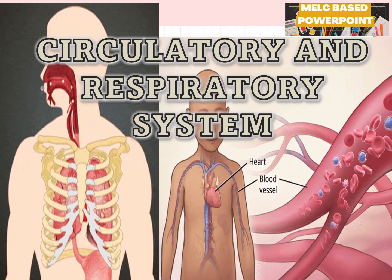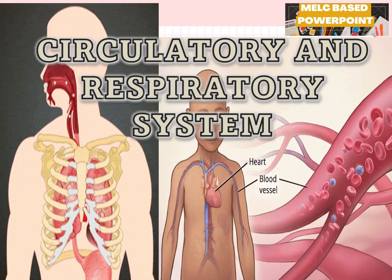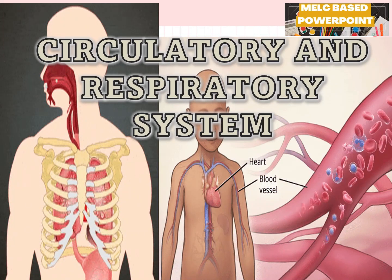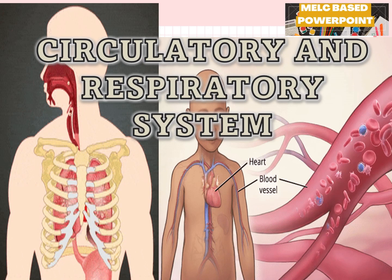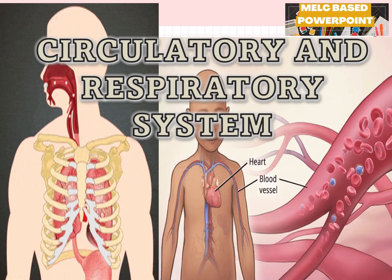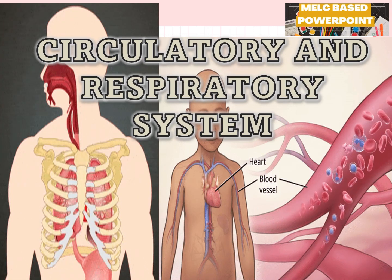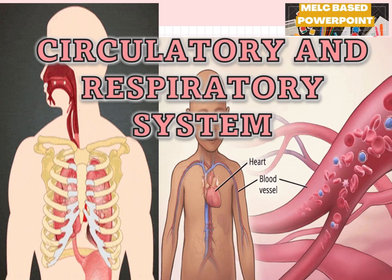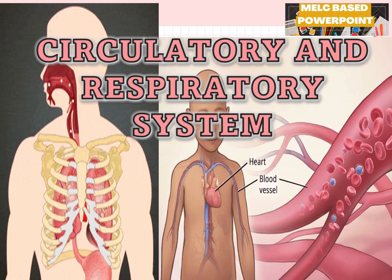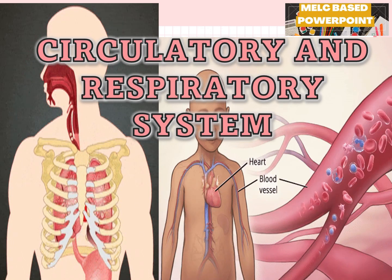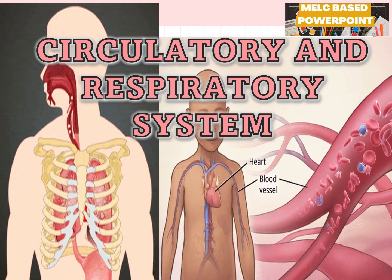The first lesson in Science 9 Quarter 1 is Circulatory and Respiratory System. Let's watch this video so you have fun learning this topic to enhance your knowledge and be the smartest kid in your classroom.